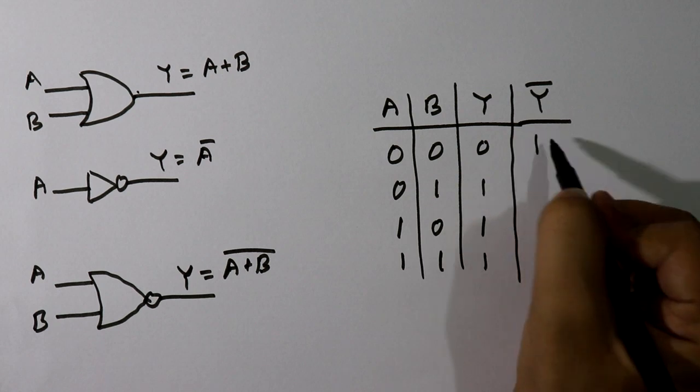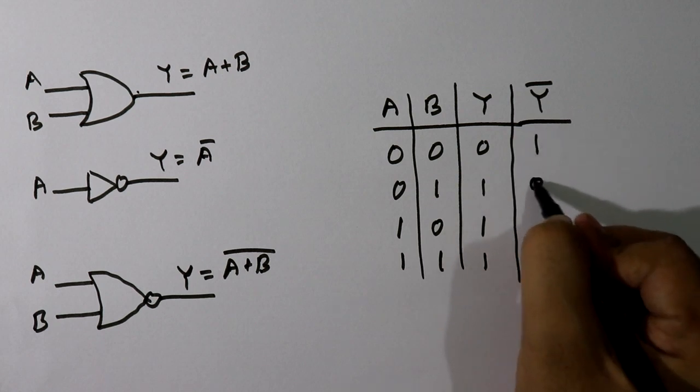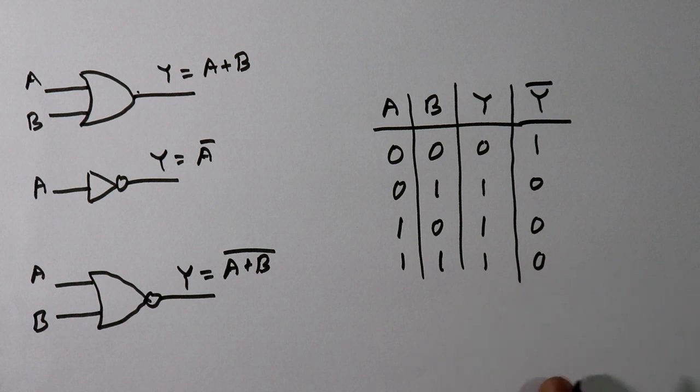Now for finding the NOR gate output we have to make its complement, so 0's complement is 1 and the other outputs will be 0, 0, 0 because these are all 1's. This is the output of NOR gate.